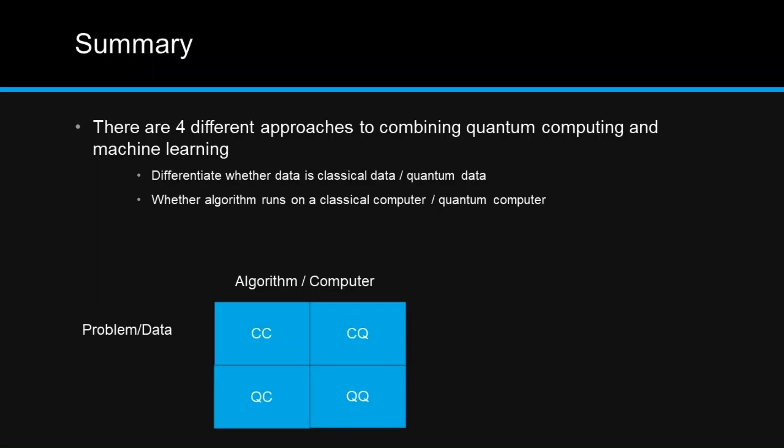Quantum machine learning is the integration of quantum algorithms with machine learning programs. To summarize in a simpler manner, there are four different approaches to combine quantum computing and machine learning. We need to differentiate whether the data is classical or quantum, and whether the algorithm runs on a classical or quantum computer. The diagram summarizes that.